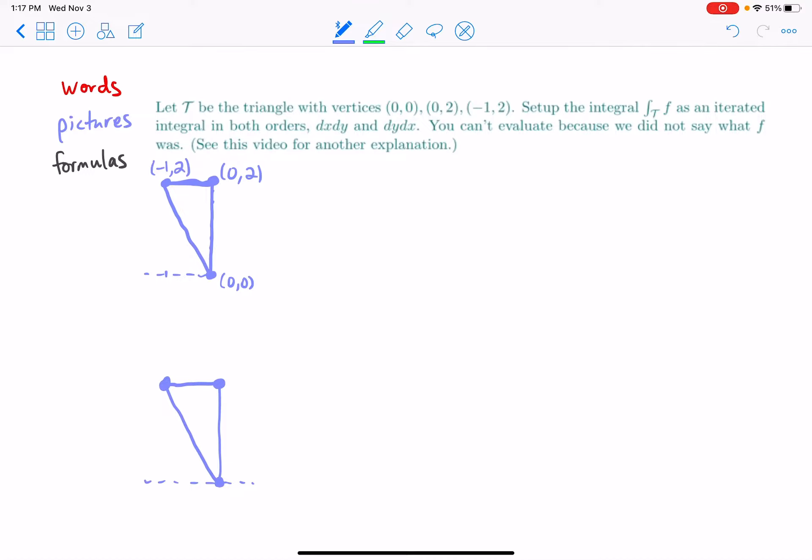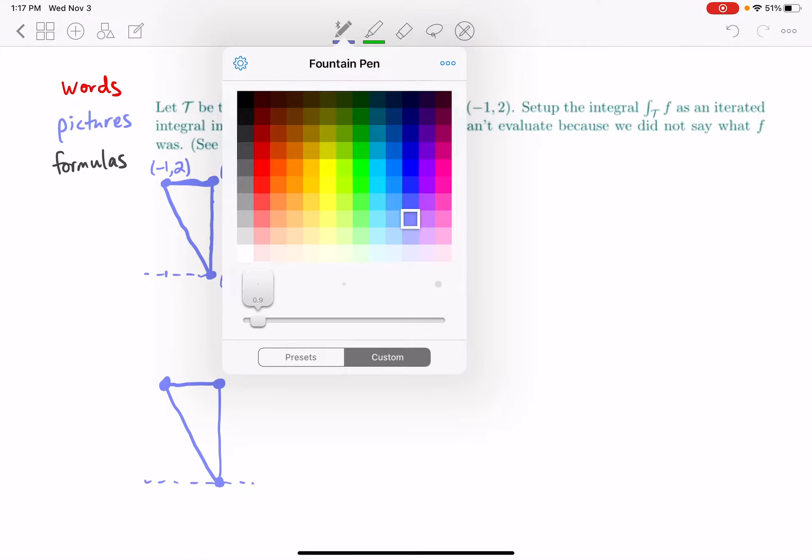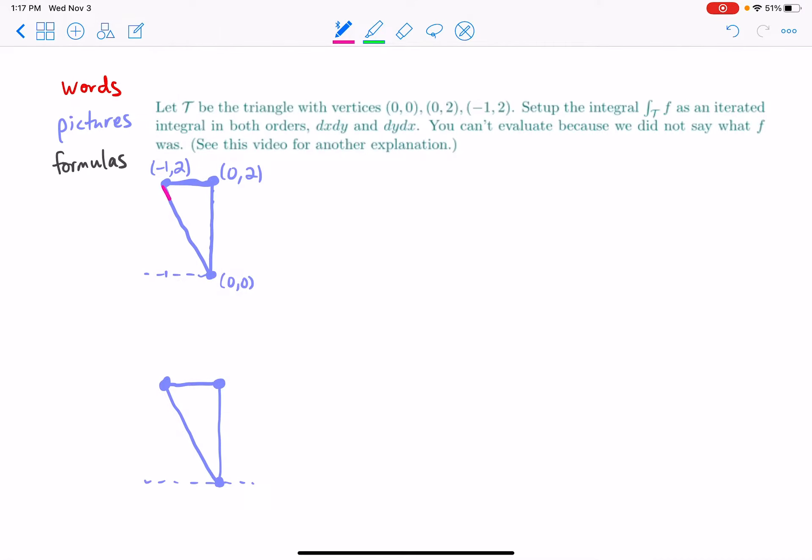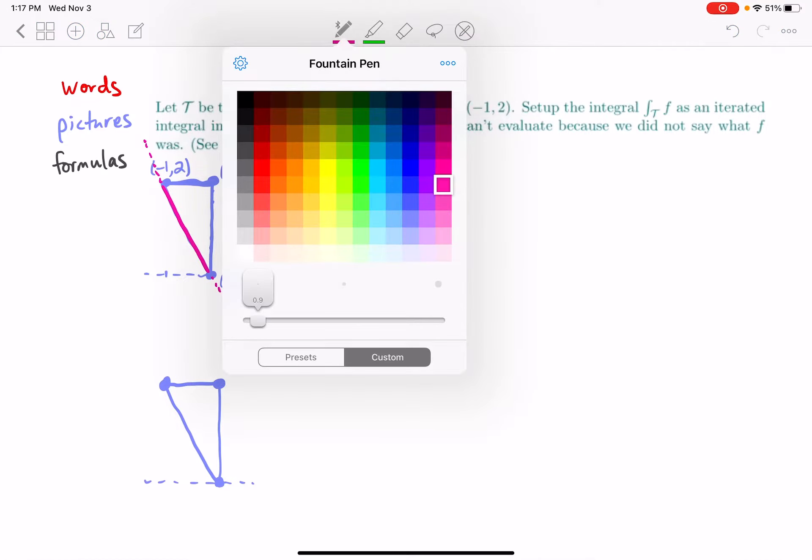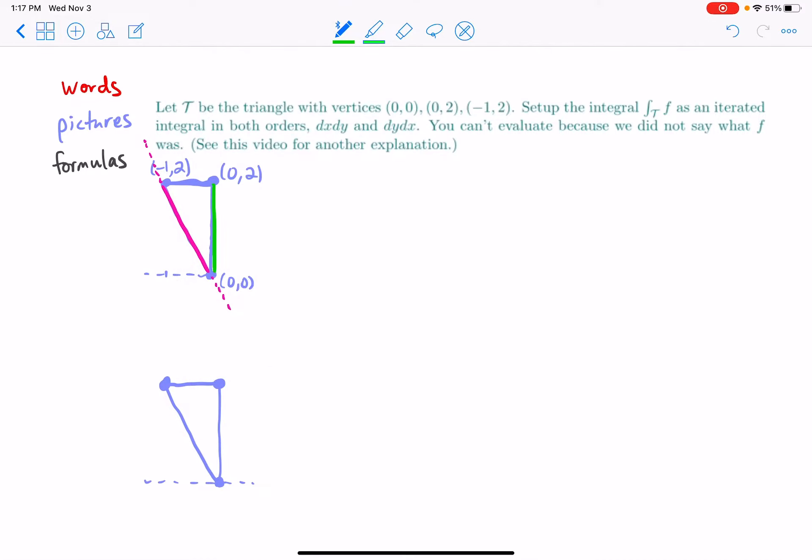Okay, and so what I'm also gonna do now is just label. So this pink side is the most complicated line, because the other lines are super easy.